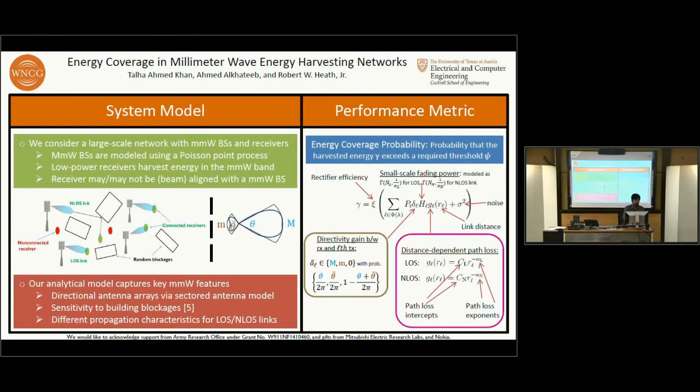In our system model, we consider two types of sensors: one we call connected, the other non-connected. If a sensor is already aligned with a millimeter wave base station, we call it a connected receiver or sensor. However, if it is completely invisible to the millimeter wave base stations, that is to say we do not assume any prior beam alignment, then we call it a non-connected receiver.